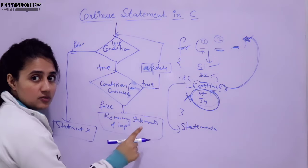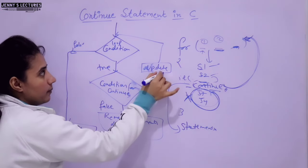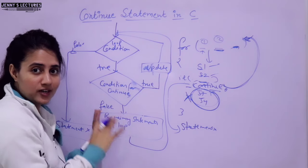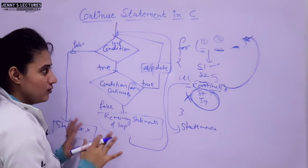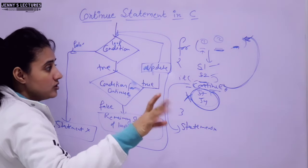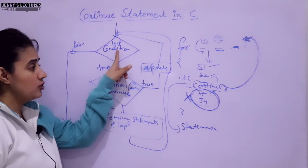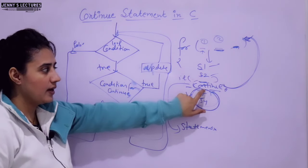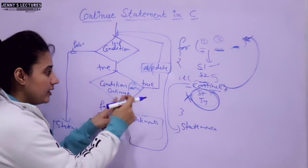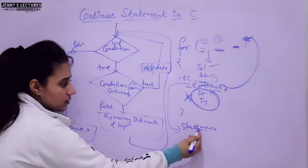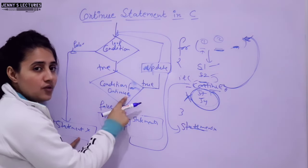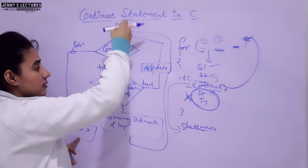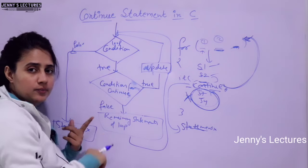But if the condition for continue is false, then the remaining statements of the loop would be executed. After those remaining statements, control goes to update - increment or decrement - and then back to the beginning of the loop. Now for break: if the condition for break is true, then exit from the loop and control goes to statement X. If the condition for break is false, then the normal update and loop condition check process continues. Now let us discuss it with the help of a program - the same program we discussed in the previous video on break statement.